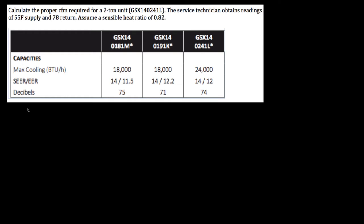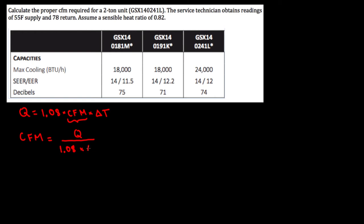The sensible heat equation indicates that Q equals 1.08 times CFM times delta T. So if we want to obtain the CFM, we're going to solve for CFM. CFM equals Q divided by 1.08 times delta T.